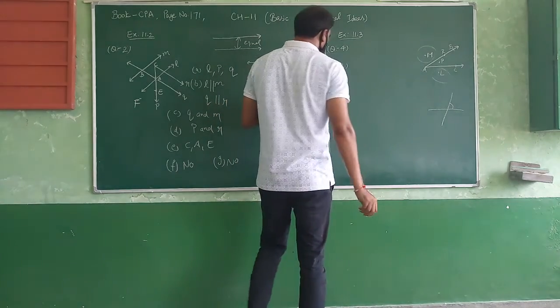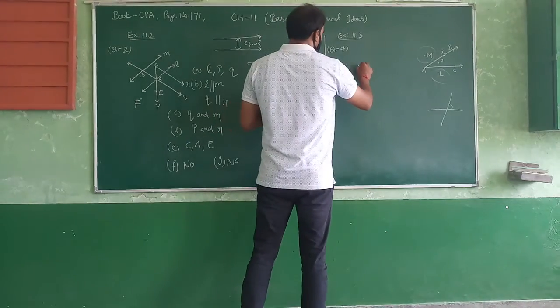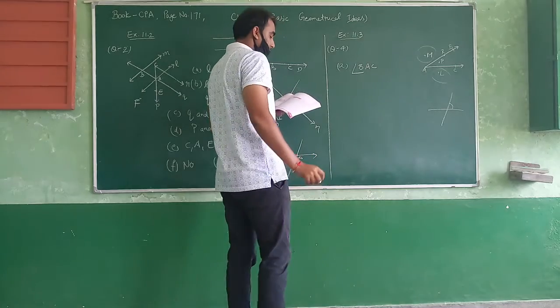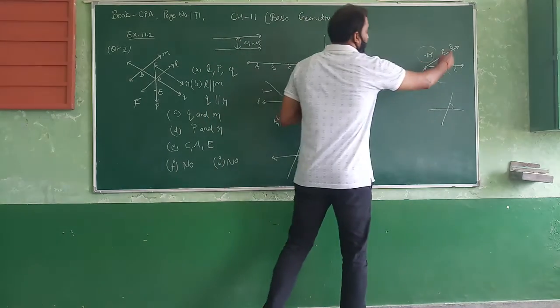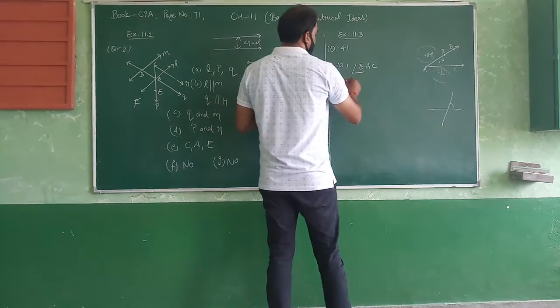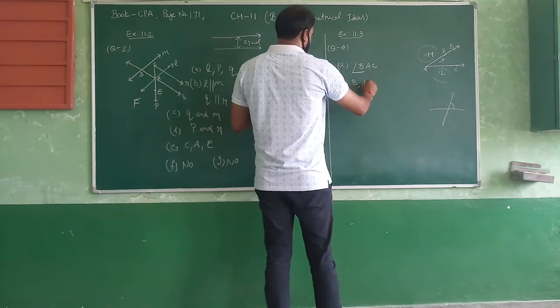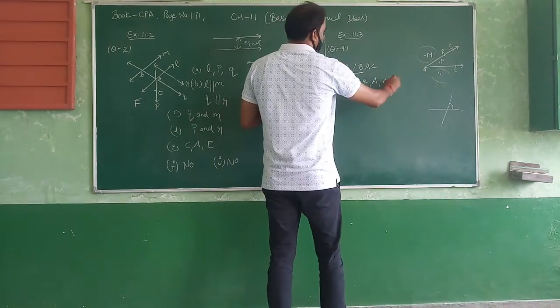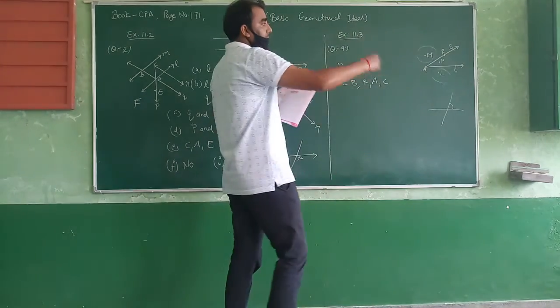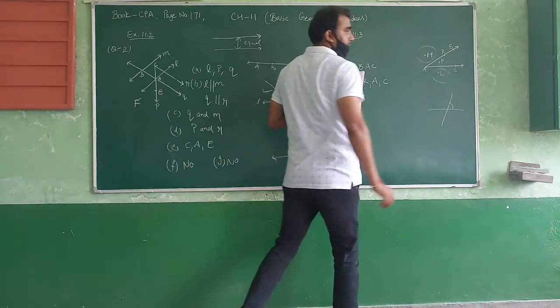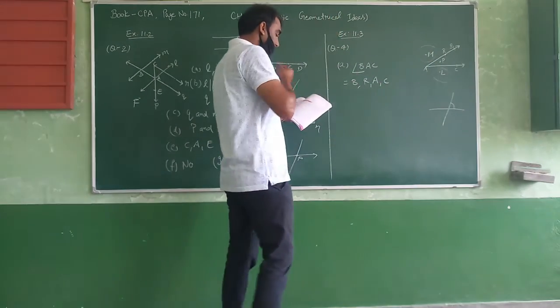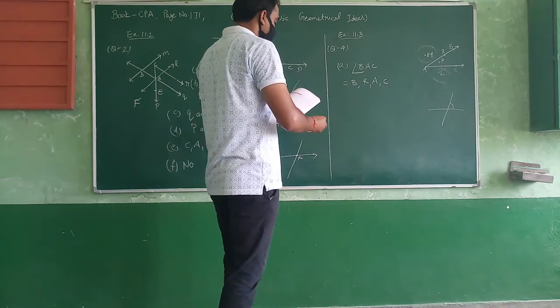So now question number 4, part A: All the points on angle BAC. The answer is B, R, A, C - just on the angles BAC. Which points lie on these sides? Now question part B: In the interior of BAC, interior means inside the arms, it means T.